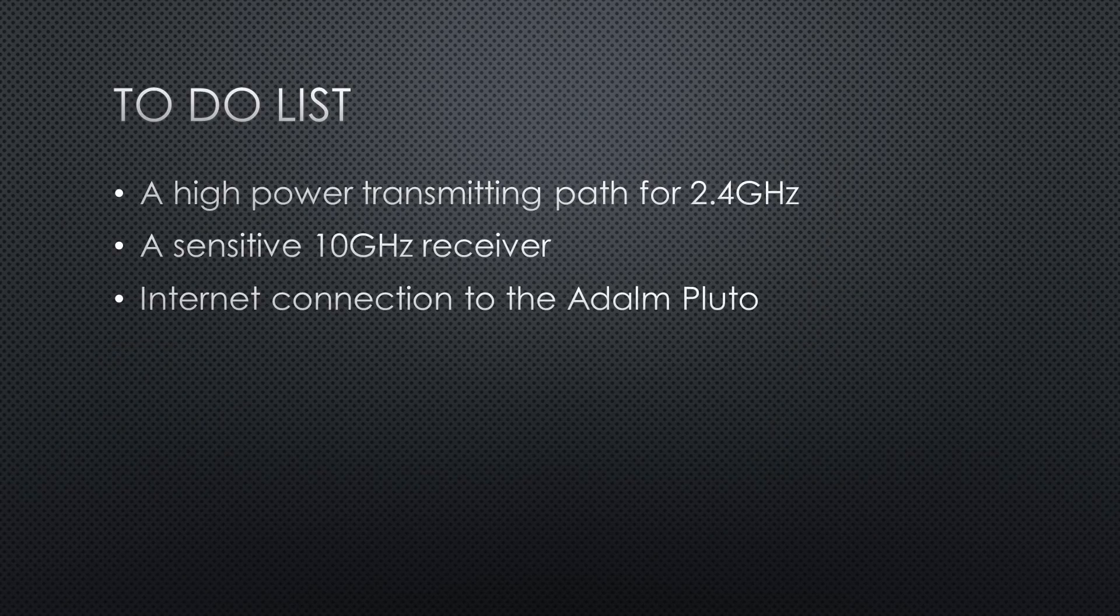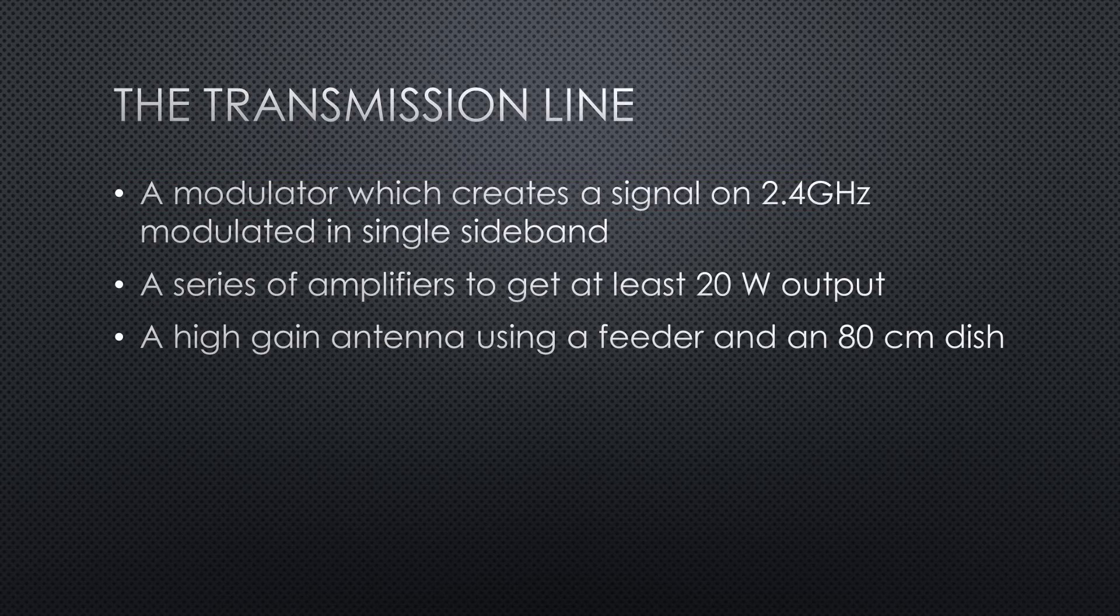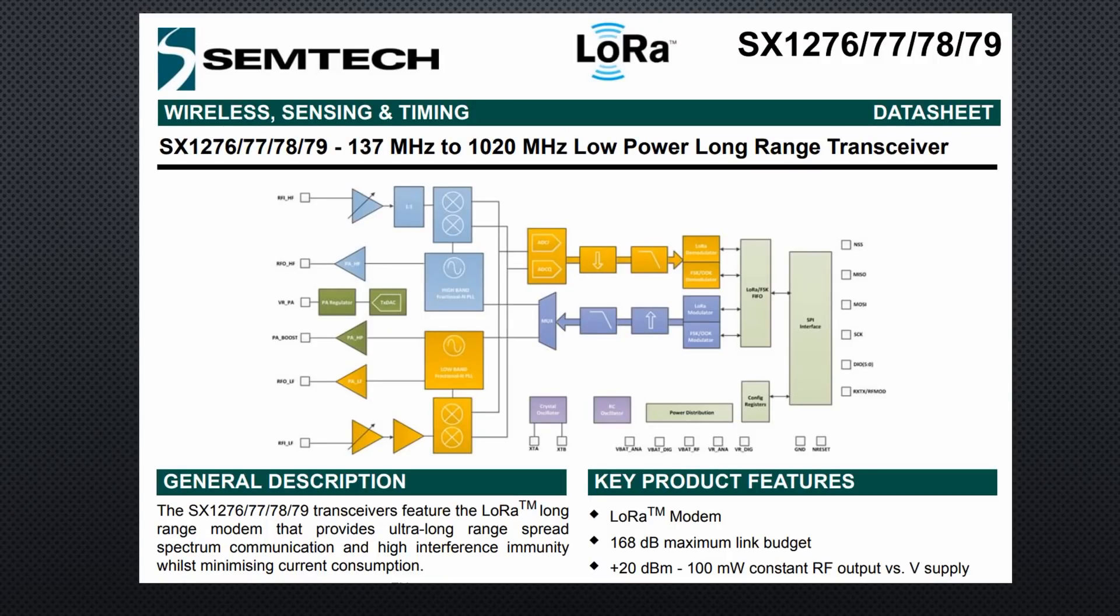Last time we got an overview of the needed components. Today we will build and test the first part. A 2.4 GHz transmitter with an output of 20W or 43 dBm. This is quite a lot if we compare it with the 100mW maximal power of a LoRa transceiver.